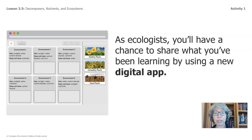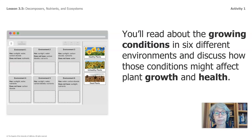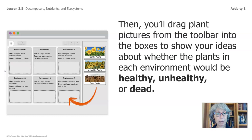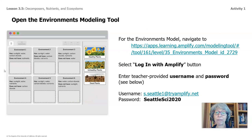As ecologists, you'll have a chance to share what you've been learning by using a new digital app. You'll read about the growing conditions in six different environments and discuss how those conditions might affect plant growth and health. Then you'll drag plant pictures from the toolbar into the boxes to show your ideas about whether the plants in each environment would be healthy, unhealthy, or dead. If you have the packet, the information to access the digital tool is included on page two.